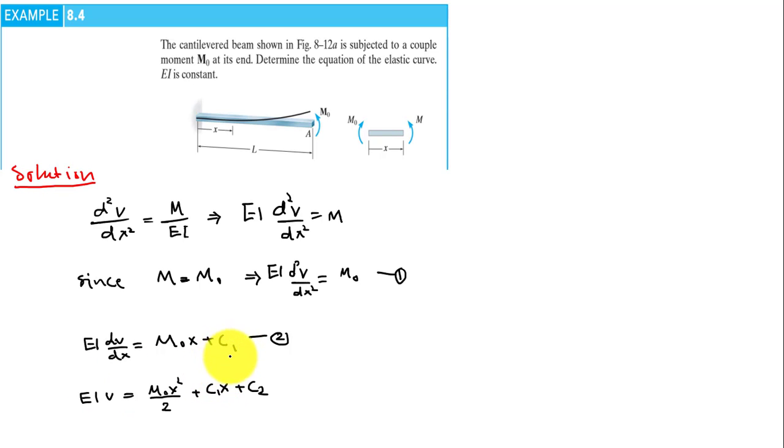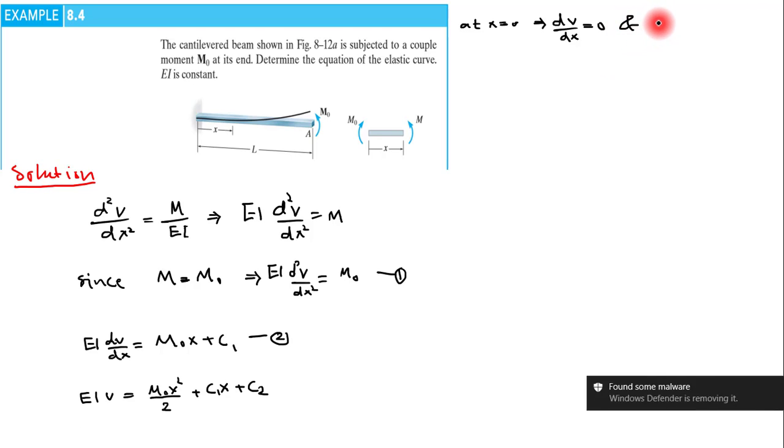Now we have to determine the values of C1 and C2. To do that we use the boundary conditions at x equals 0. We have dv/dx equals 0, as well as v equals 0.